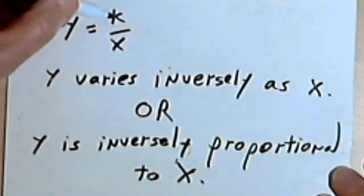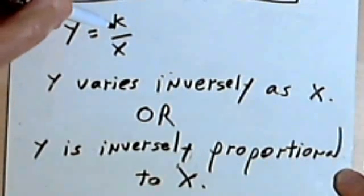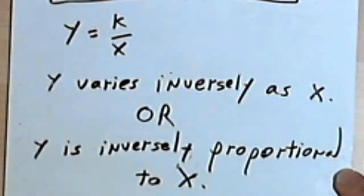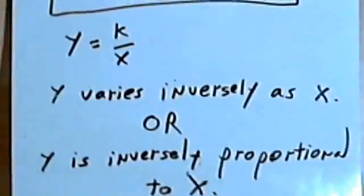Remember k is going to be a constant. It's sometimes called a constant of variation or a constant of proportionality. Okay, let's take a look at a couple of examples. This should be pretty easy.